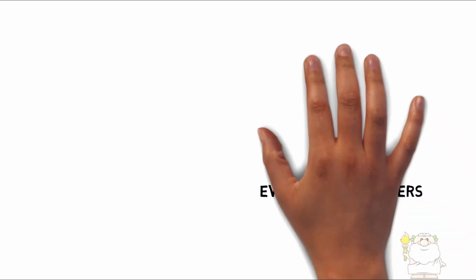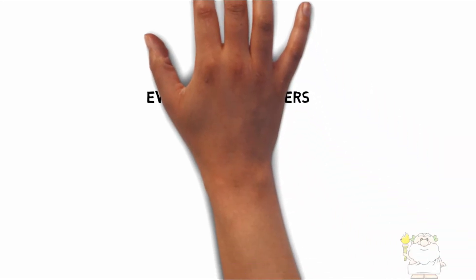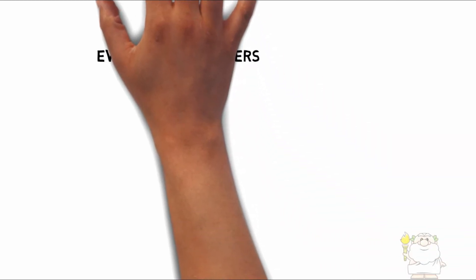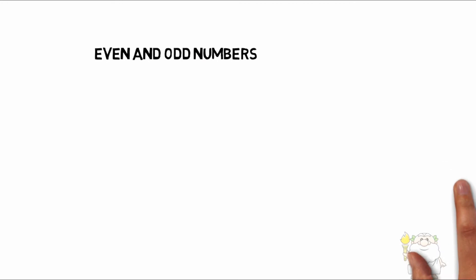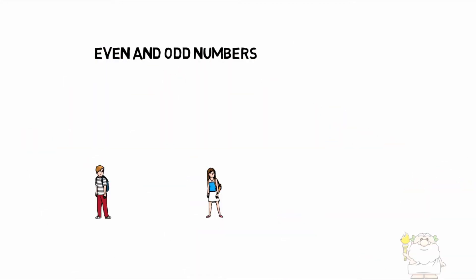Even and odd numbers. Even numbers can be equally divided by two. Let's practice with ice cream. We have two children sharing one cone,